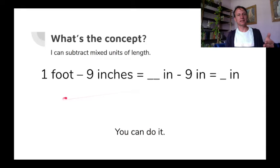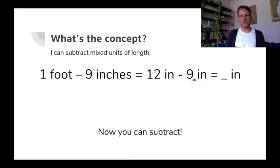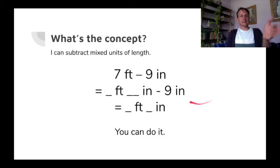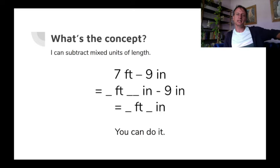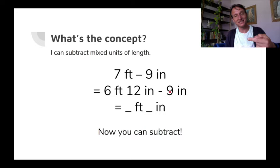One foot minus nine inches. In order to do this, I have to convert the feet to inches — there are 12 inches in a foot. Now I can subtract: 12 inches minus nine inches leaves three inches. Seven feet minus nine inches: we're going to leave six of those feet alone and bust out one of them — that seventh foot — as 12 inches. So six feet, 12 inches. Now it's the same 12 minus nine we just did, except we leave six feet alone. That leaves six feet, three inches.